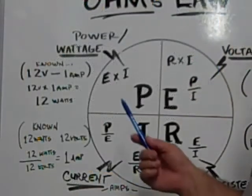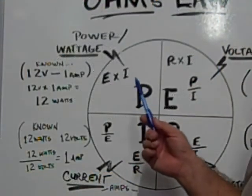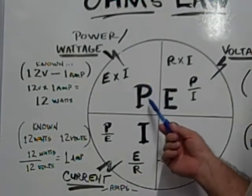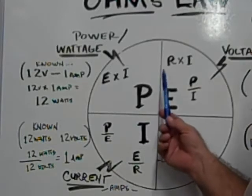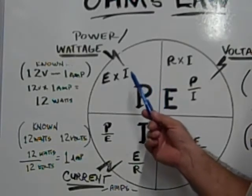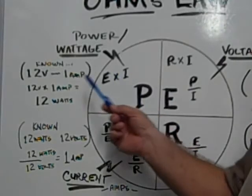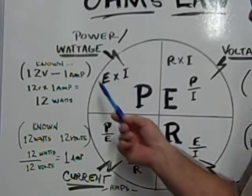Say you were to find out what the power or wattage of a bulb is. Wattage is indicated by a P and you know what the voltage is and the amperage.